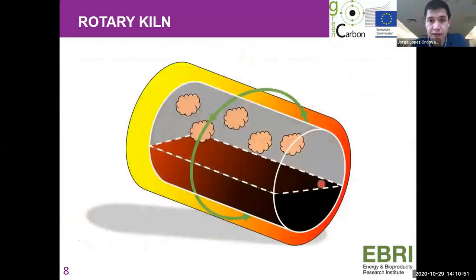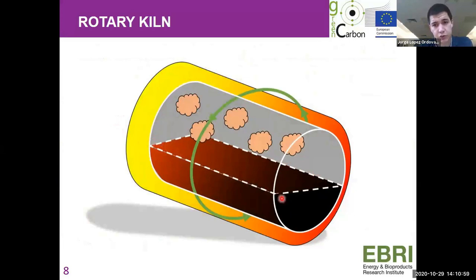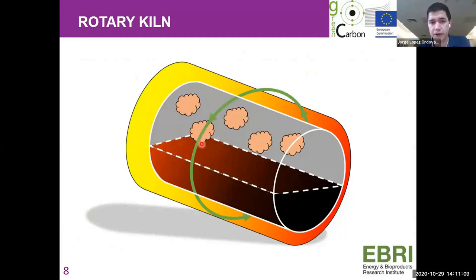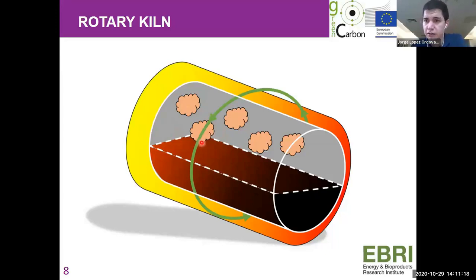This is a good scheme of a rotary kiln. Biomass enters on one side, and along the reactor it keeps transforming into char — which becomes progressively darker — while simultaneously releasing pyrolysis vapors, including condensable and non-condensable parts. The whole cylinder rotates to achieve proper mixing of materials, but it's far more complex than it appears.